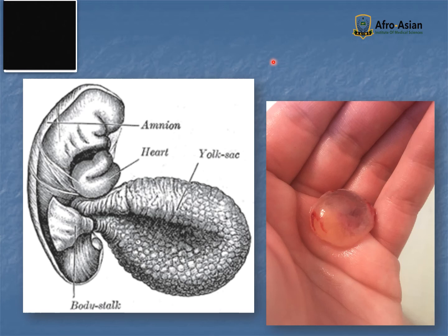The answer is that it may contain the yolk sac but no embryo even after scanning across all planes of the gestational sac, thus being diagnostic of an embryonic gestation. A blighted ovum is a pregnancy in which the embryo never develops or develops and is reabsorbed.